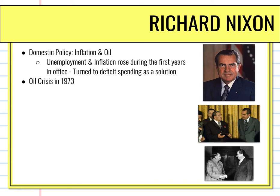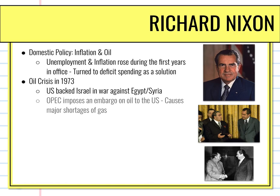The oil crisis came in 1973. The United States backed Israel in a war against Egypt and Syria. Because of this, the countries known as OPEC, the oil producing countries, imposed an embargo of oil on the United States. They ultimately shut off our access to oil and therefore gasoline, causing major shortages of gasoline in the United States.